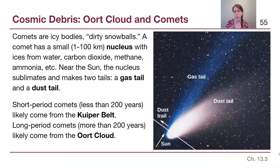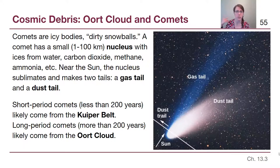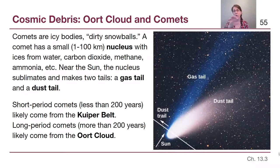So when you see comet tails, they aren't flowing behind the comet like someone with long hair running through a field — they are being blown in a very particular direction, away from the Sun.